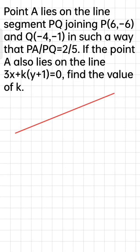Point A lies on the line segment PQ joining P and Q in such a way that PA upon PQ is 2 is to 5. PA and PQ का ratio 2 is to 5 है। And if the point A also lies on the line — this line की equation given है — बताना है के K की value क्या होगी।